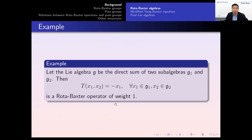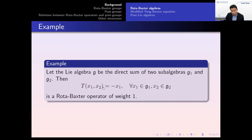We give another example. We consider a Lie algebra G to be the direct sum of two sub-algebras G1 and G2, where G1 and G2 are only sub-algebras — G is their direct sum as vector spaces, not as algebras. Then we define T to be the minus of the projection, and it is a Rota-Baxter operator.